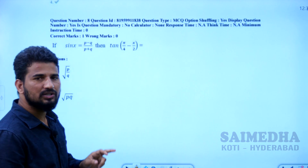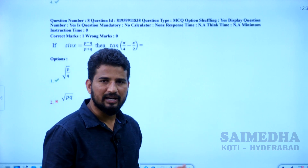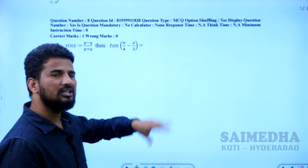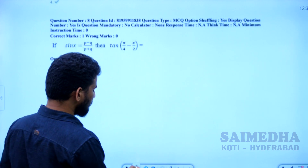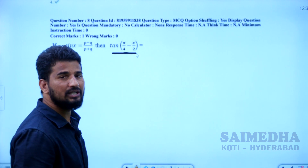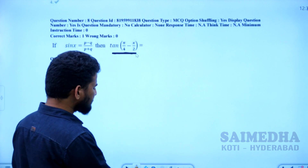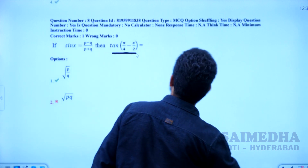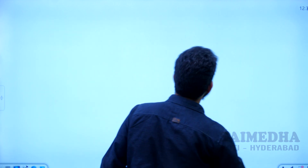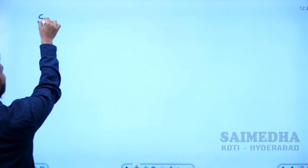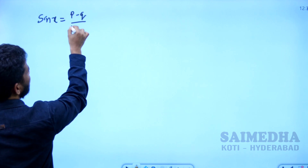The question is: if sin x is equal to (p minus q) by (p plus q), then tan of (π/4 minus x/2) is equal to what? Sin x is a function in terms of p and q. We will apply the tan of (π/4 minus x/2) formula. The sin x was given as (p minus q) by (p plus q).